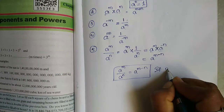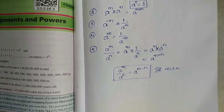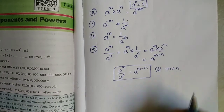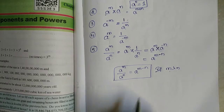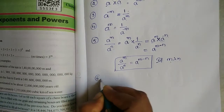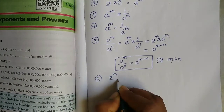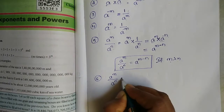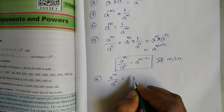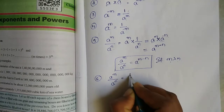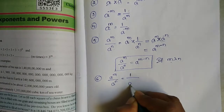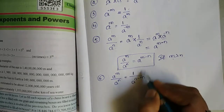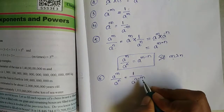If m is greater than n. The sixth formula: a to the power of m divided by a to the power of n equals 1 by a to the power of n minus m. Same formula, just to explain the case when m is less than n.